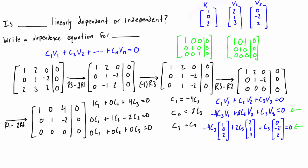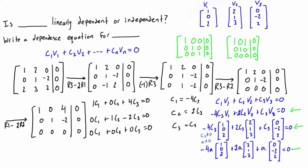Since c3 can be any non-zero number, you can replace it with any letter you like, for example 'a'. This just makes it clearer that you can pick any number for a except 0. To test the equation, let's pick a specific value — let's say a (or c3) equals 1 — and verify that the expression equals zero.